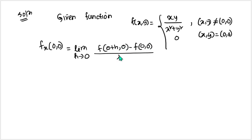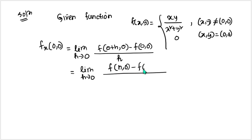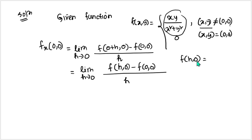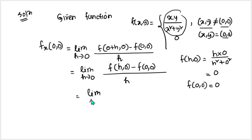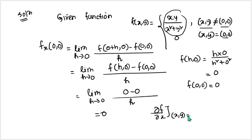So f(h, 0) = 0, and f(0,0) = 0 directly from the given definition. Therefore the limit becomes: limit as h→0 of [0 − 0] / h = 0. So the partial derivative of the function with respect to x at the point (0,0) is 0.